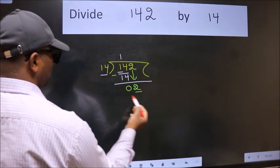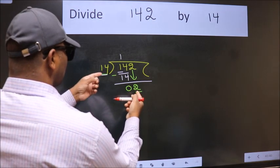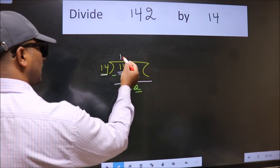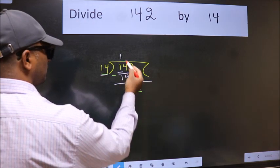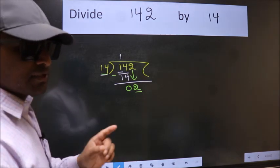Here we have 2. Here 14. 2 is smaller than 14. So what many do is they directly put dot take 0 which is wrong. Why is it wrong?